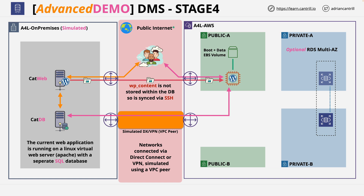Welcome back to stage four of this advanced demo series. At the end of stage three, this is the architecture you have implemented. You've copied over all of the non-database assets across to the AWS WordPress application instance, and it's still pointing at the on-premises database. You did provision an RDS implementation in the previous stage, and that's where we're starting in stage four. We're going to complete a database migration from CatDB through to this RDS instance using DMS.